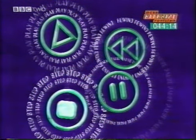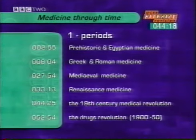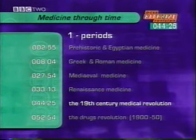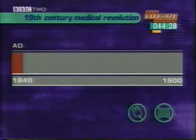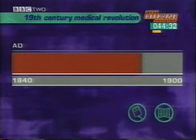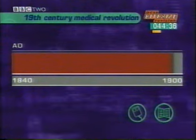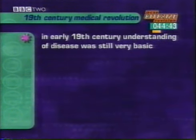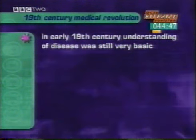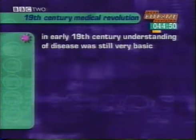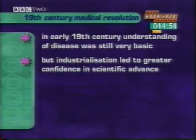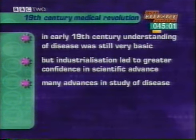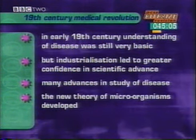That's the end of the section on Renaissance medicine. Up to 200 years ago, change in medical knowledge and practice had mostly been extremely slow. In the 19th century, however, things began to change very fast. At the beginning of the century, understanding of disease was still very basic — some still believed in the four humours. But by the 1850s, the Industrial Revolution had brought enormous wealth to many European countries. Industrialisation helped bring greater confidence in scientific and medical progress. Advances were being made in the study of disease, including the revolutionary new idea that disease was associated with tiny organisms or microbes.